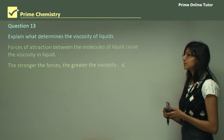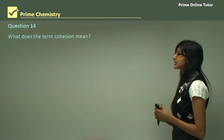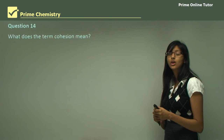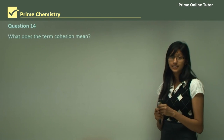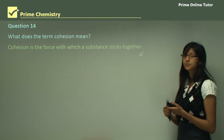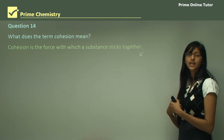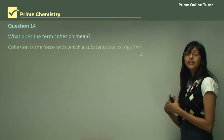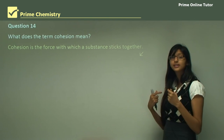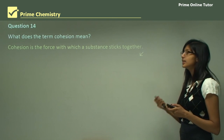Question 14 asks what the term cohesion means — you only need to provide a definition. Cohesion is the force with which a substance sticks together. Cohesion allows water molecules to stick to each other. Also remember that cohesive forces always exist between like molecules — both molecules must be the same for a cohesive force to exist, and it helps the substance stick to itself.